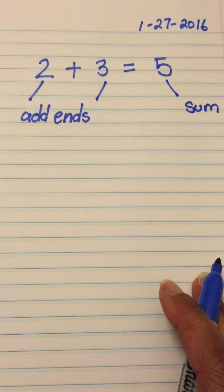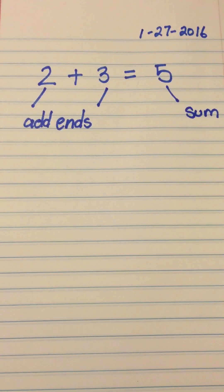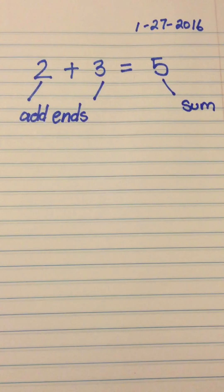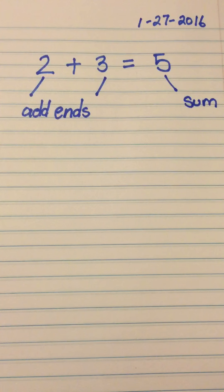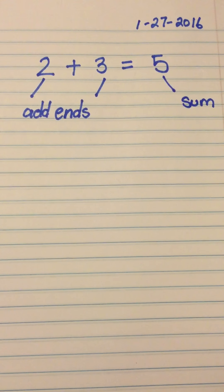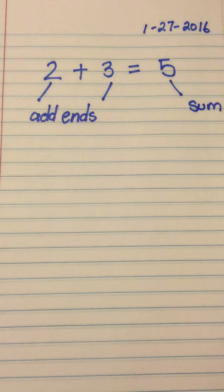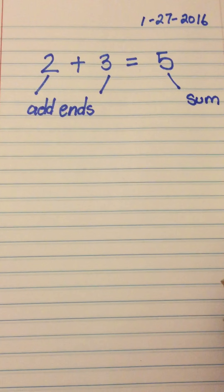Awesome work, everyone. Okay, let's move along. We're going to continue working with two plus three equals five. The first thing we're going to do is we are going to check to see what happens when we flip these two numbers around. Let's try it out.